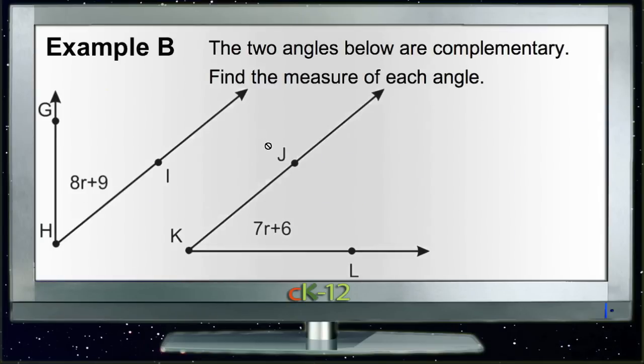Example B again tells us that the two angles we're given are complementary, but doesn't actually give us any degree measure for either angle. All we have is an expression that tells us that the number of degrees in the first angle is 8R, some unknown variable, plus 9 degrees, and that the second measure is 7R, the same variable, plus 6 degrees.